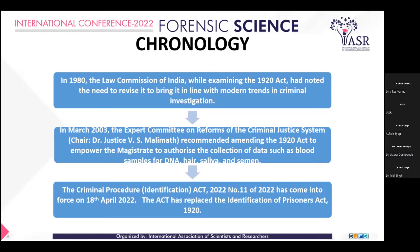What is the chronology of the Criminal Procedure Identification Act? In 1980, the Law Commission of India, while examining the 1920 Act, noted the need to revise it to bring it in line with modern trends in criminal investigation. In March 2003, the Expert Committee on the Reform of the Criminal Justice System, chaired by Dr. Justice V.S. Malimath, recommended amending the 1920 Act to authorize the collection of data such as blood samples for DNA, hair, saliva, and semen. Therefore, the Criminal Procedure Identification Act, number 11 of 2022, came into force on 18 April 2022, replacing the Identification of Prisoner Act 1920.